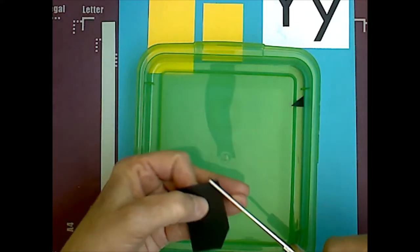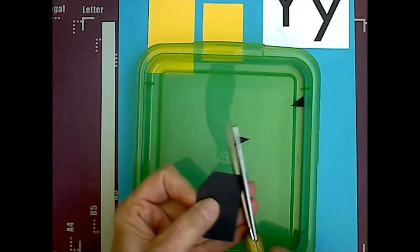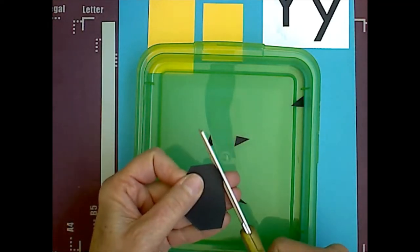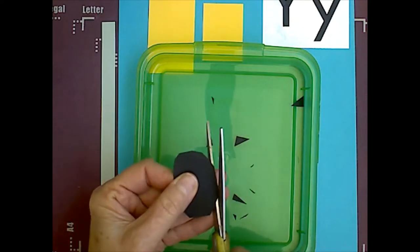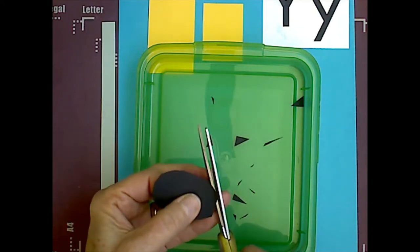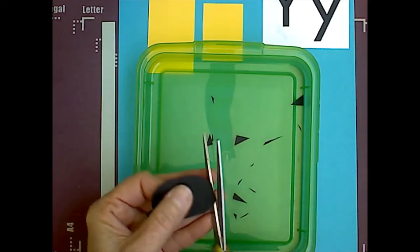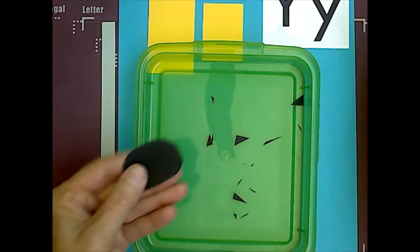We're going to cut all four corners, and hopefully, when we're done, it's going to be an oval. Magic cut it, if I didn't already say that. And there we go.